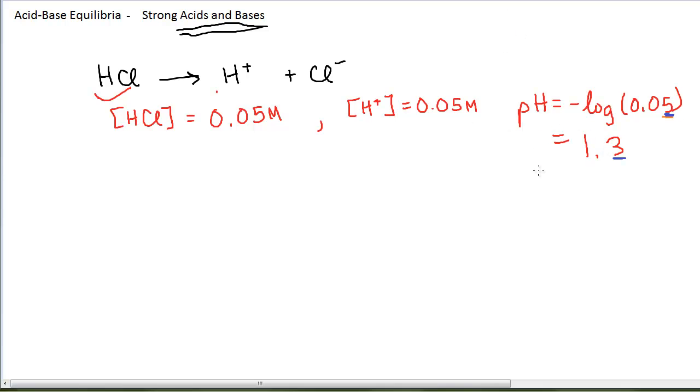A good thing to keep in mind as you're calculating pHs of acid and base solutions is that in an acid solution, the pH is going to be less than 7, and in a base, the pH is going to be greater than 7. This will keep you from making silly mistakes sometimes. We did get a pH that was less than 7, and that's what we were expecting.